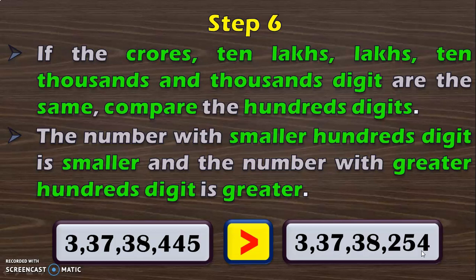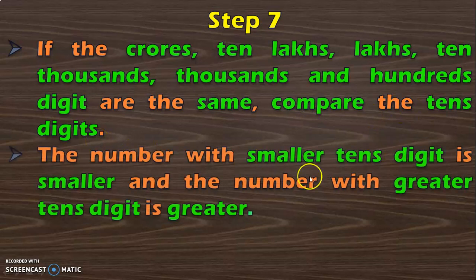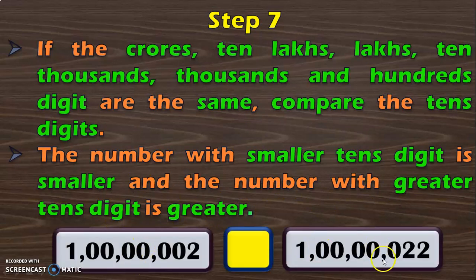Dear viewers, the rule is the same. We have to keep comparing from the left, each digit by their place value. If both numbers have the same digit in the same place value, then move on to the next right side lower place value and compare the digits. Then we have a case where crore's, 10 lakhs, lakhs, 10,000th, thousandth and hundredths digits are also the same. In such cases compare the tens digit. The number with smaller tens digit will be smaller and the number with greater tens digit will be greater. Here you can visibly see that all the higher place values are the same, so you come straight to the tens digit where you have 0 and 2. With that you conclude that 1 crore and 2 is lesser than 1 crore and 22.